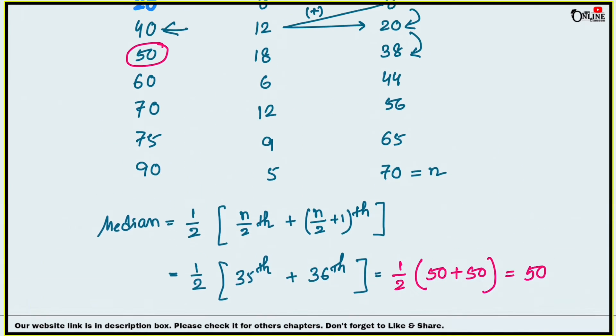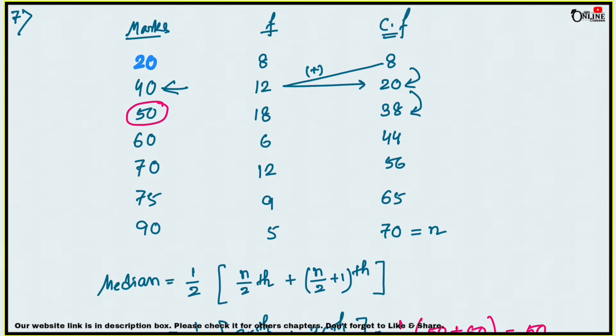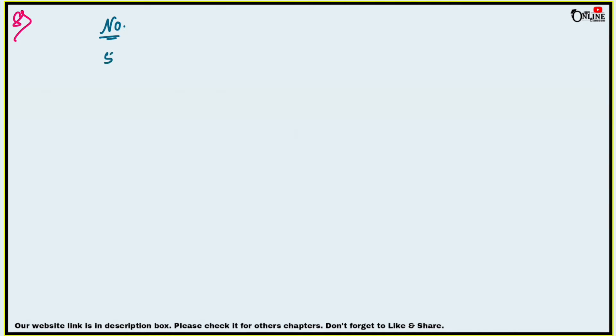The answer for sum number 7 is 50. Now moving to sum number 8: calculate the mean and median for the following distribution. The numbers (variates) are in ascending order: 5, 10, 15, 20, 25, 30, 35. The frequencies are: 1, 2, 5, 6, 3, 2, 1.